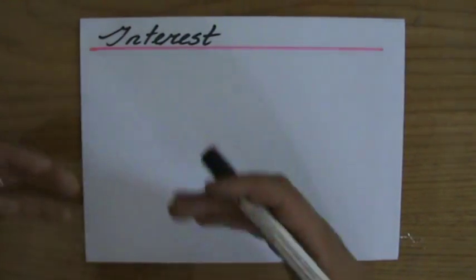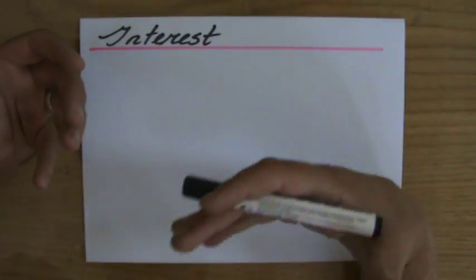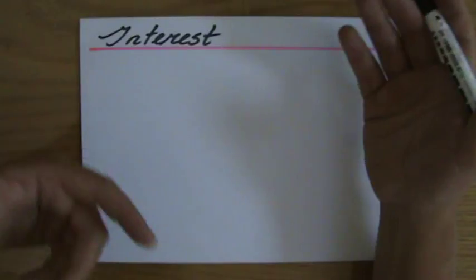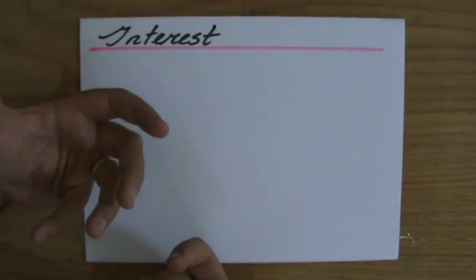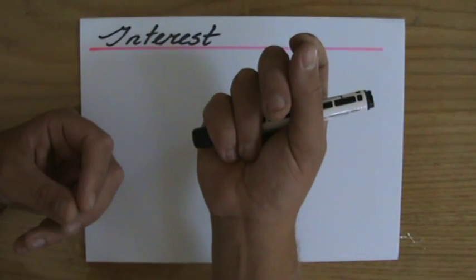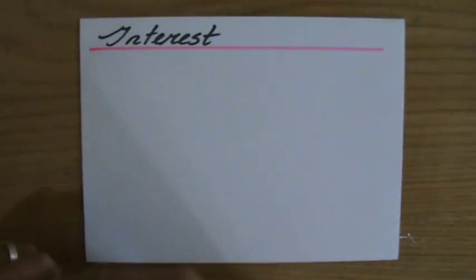So interest is the money I get from the bank if I give them my money to invest. But also the other way around, if I would take money from the bank, I would have to pay them interest, a particular percentage over the money I borrow from them.